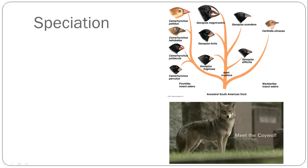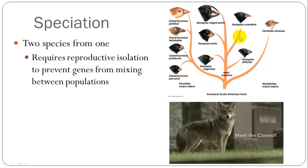Sometimes this change in selective pressures will cause speciation to occur. This has been demonstrated with the Galapagos finches, discovered by Charles Darwin — a series of islands off the coast of Ecuador where one mainland species of finch colonized the islands, and the different selective pressures there led to different species of finches from that one original species. It requires reproductive isolation in populations to prevent gene flow and allow speciation to occur.